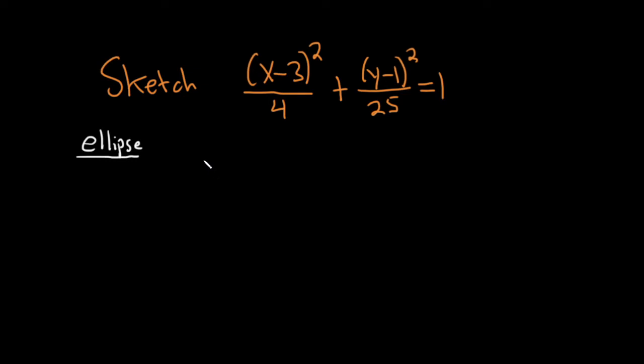So let's go ahead and find the center. To find the center you just switch the signs. So it'll be (3, 1) because the center is (h, k). You just switch the sign here and switch the sign here.